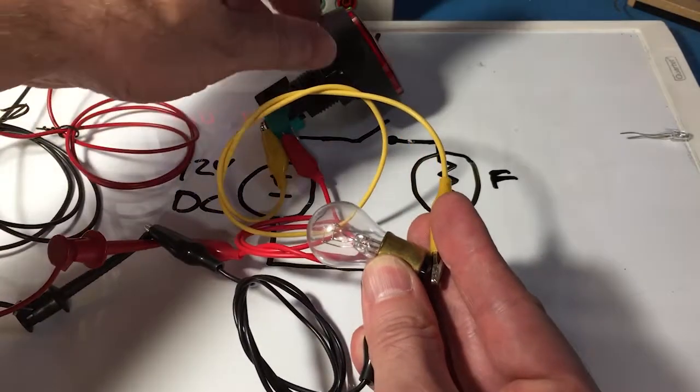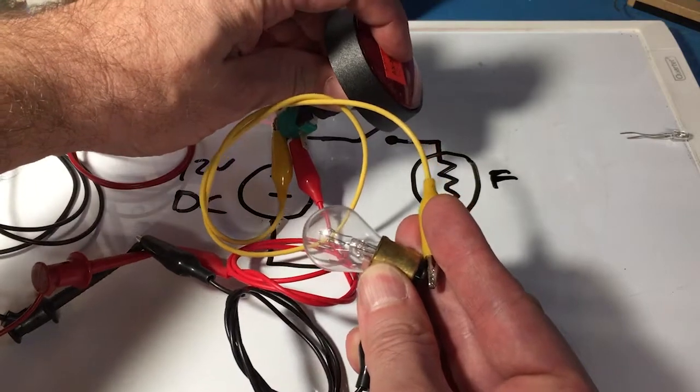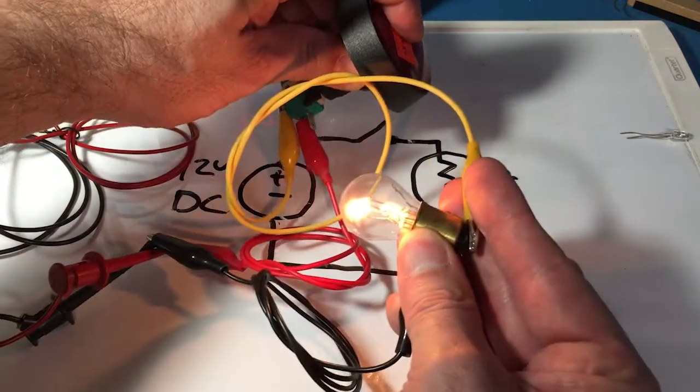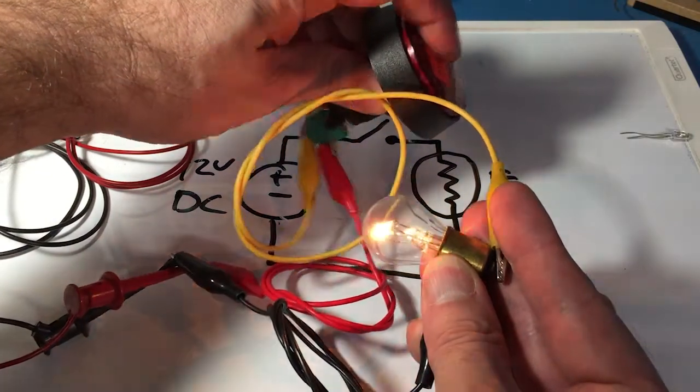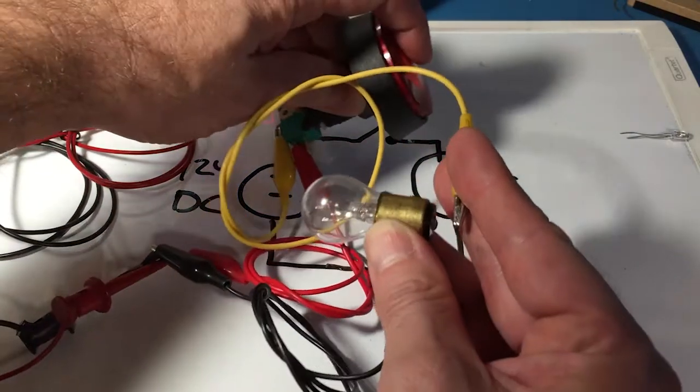So I have it wired up now. In theory, push on the brake light and nothing happens. Oh, there it goes! Okay, so brake switch down, filament lights up. It's not very bright. Let's try the other side.